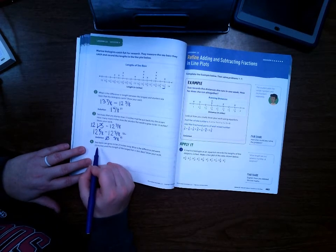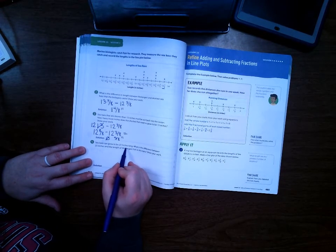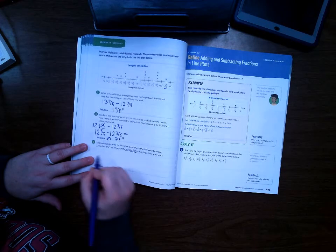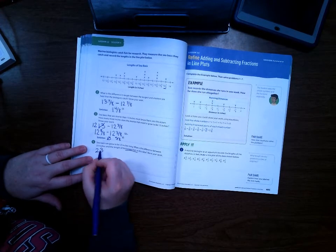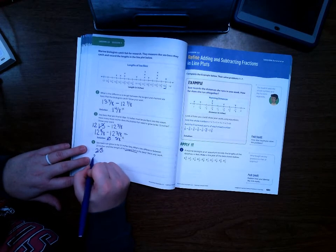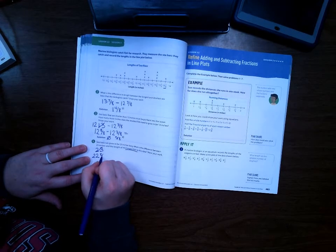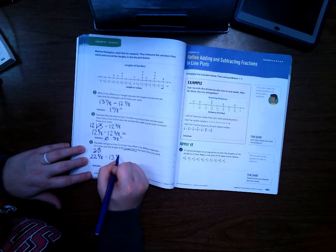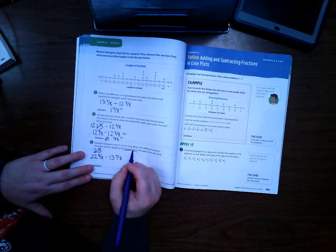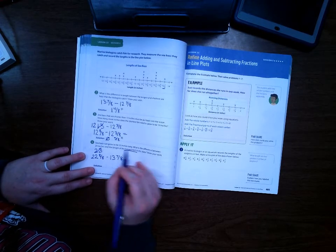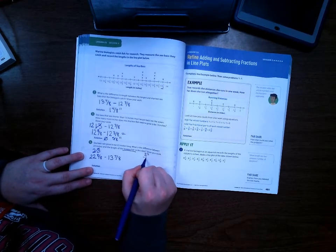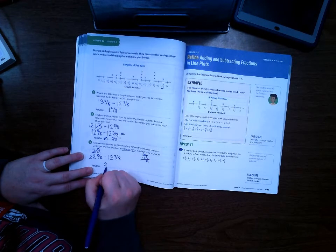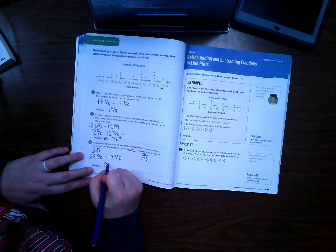Last one. Sea bass can grow to be 23 inches long. What is the difference between 23 inches and the length of the longest fish in the data? So 23, and again, we're probably going to have to change this. So we're going to do 22 and 8/8 because we're working with eighths. The longest one is 13 and 7/8. So first we can do 22 minus 13. So it's 9. And then 8/8 minus 7/8 is 1/8.